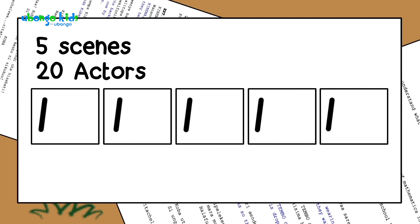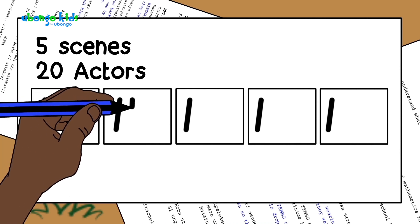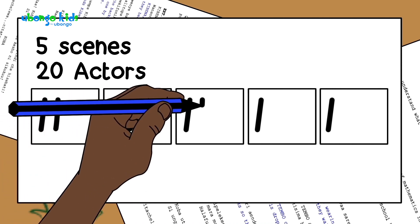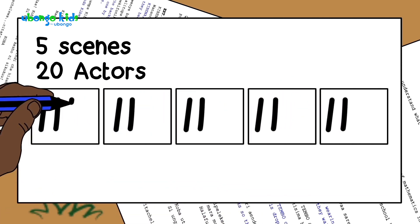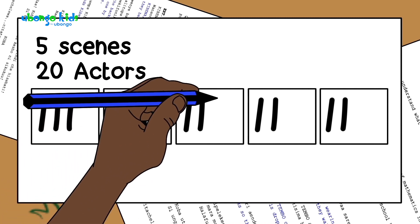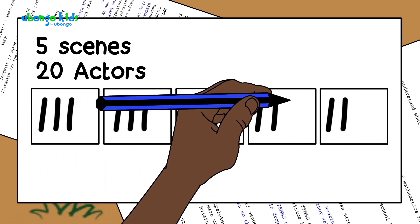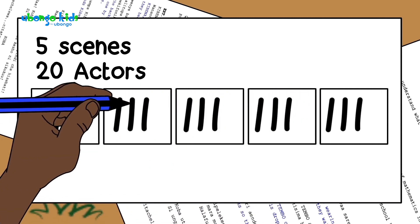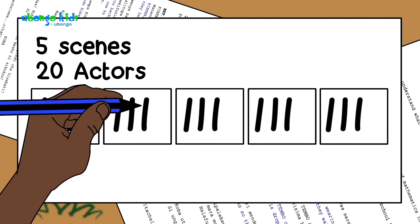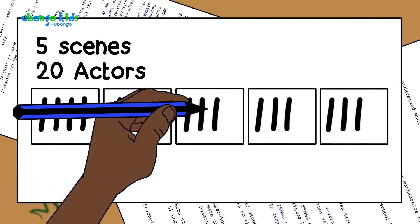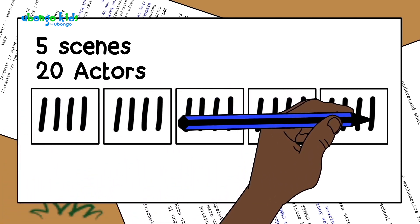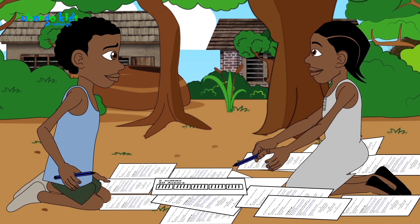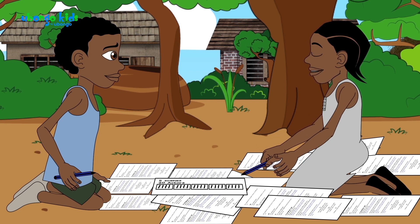Okay, Koba, go put the rest in their scenes: six, seven, eight, nine, ten, eleven, twelve, thirteen, fourteen, fifteen, sixteen, seventeen, eighteen, nineteen, twenty. Yes, so you need to use four actors in each scene.